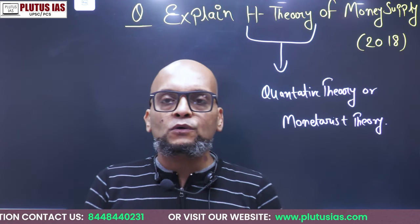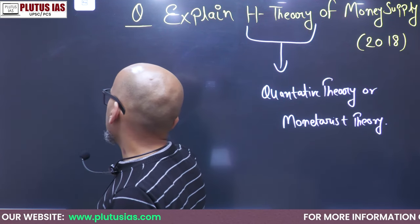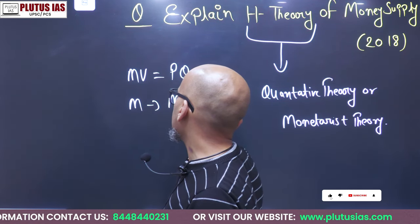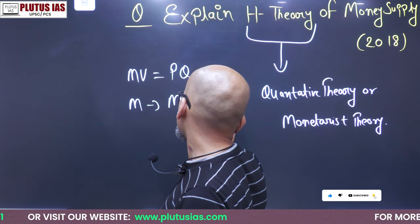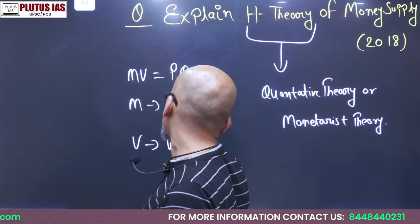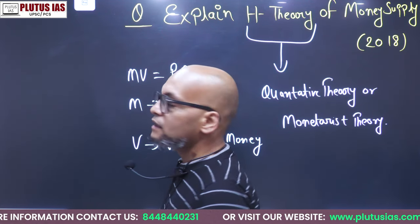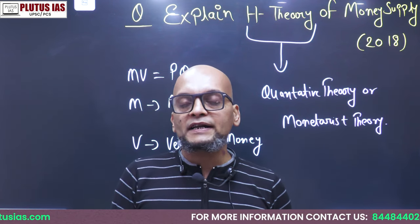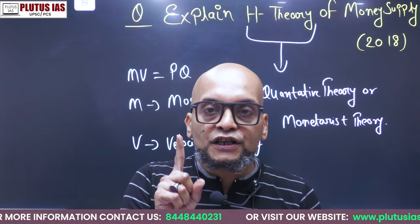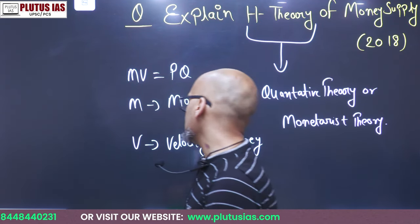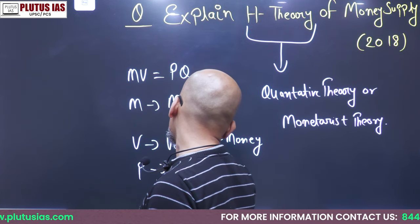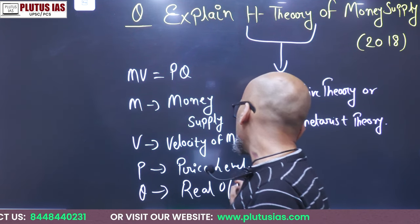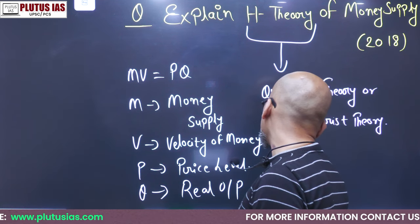Let us understand this theory step by step in an elaborate manner. The theory is represented by the equation MV = PQ. Here, M is representing money supply, V is the velocity of money — that is, the frequency of spending a unit of currency, meaning at what frequency people are spending a unit of currency. P is representing the price level, and Q is the real output of goods and services.